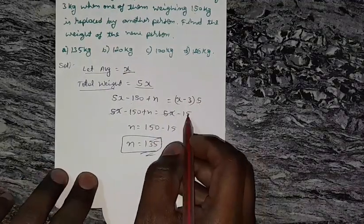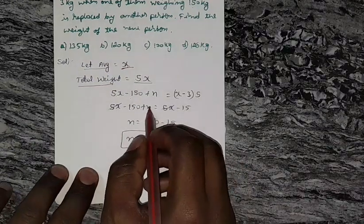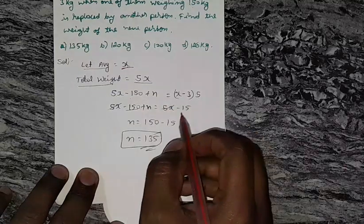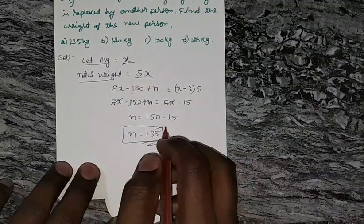5x minus 150 plus n equals 5x minus 15. The 5x gets canceled. We need the value of n, so shift 150 to the right side: n equals 150 minus 15, which is 135.